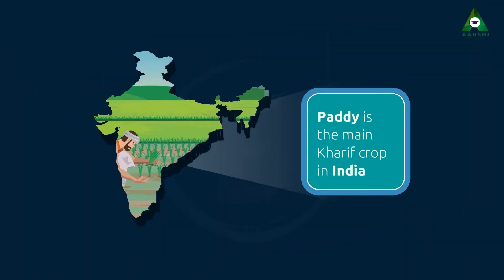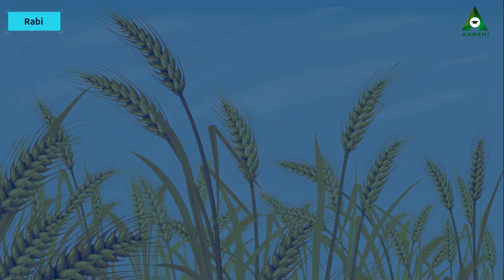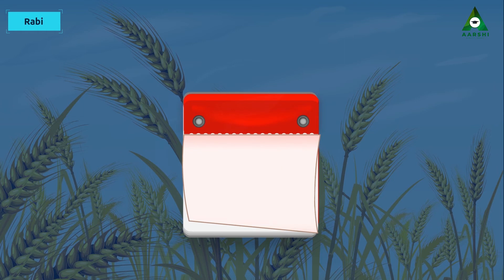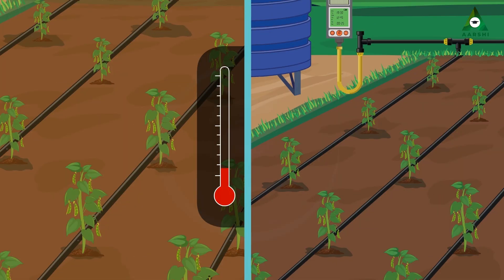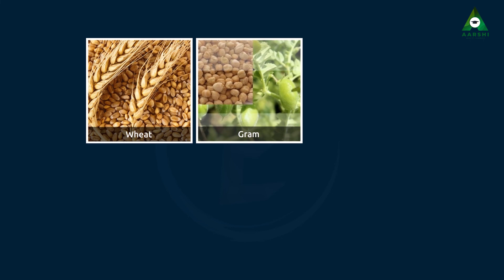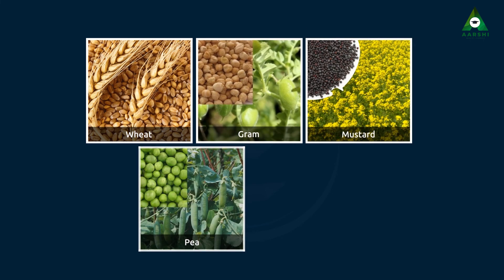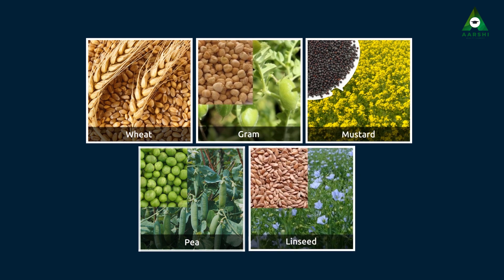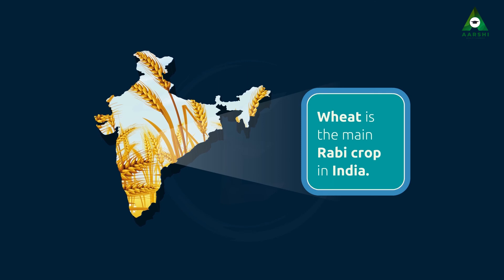Paddy is the main Kharif crop in India. Rabi crops are grown in the winter season. Rabi crops are sown in October and harvested in March. Rabi crops require mild temperature and moderate water to grow properly. Wheat, gram, mustard, pea and linseed are examples of Rabi crops. Wheat is the main Rabi crop in India.